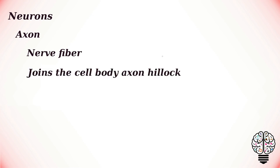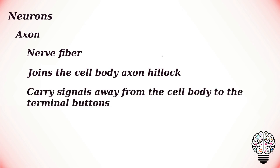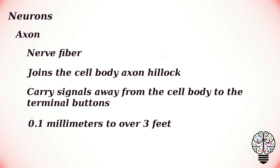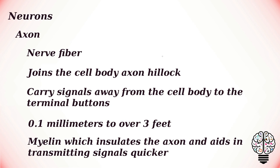These proteins are vital for other parts of the neuron to function. The axon, also called a nerve fiber, is a tail-like structure of the neuron which joins the cell body at the junction called the axon hillock. The function of the axon is to carry signals away from the cell body to the terminal buttons in order to transmit electrical signals to other neurons. Most neurons just have one axon, which can range in size from 0.1 millimeters to over 3 feet.